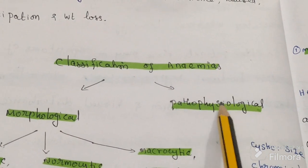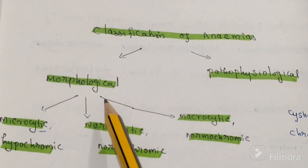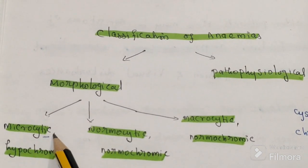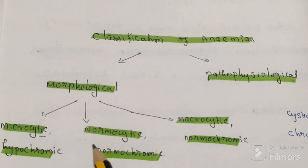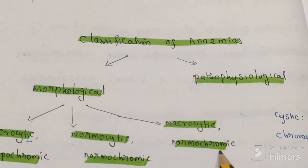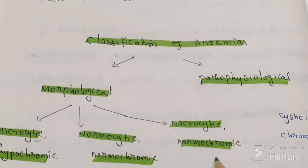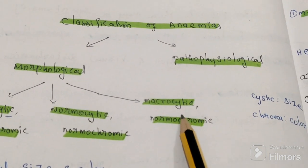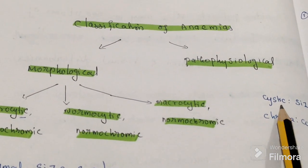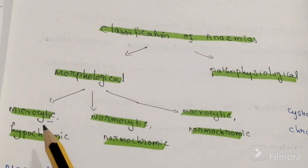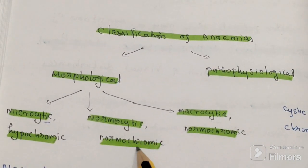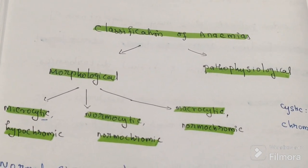Then normocytic or normochromic, and macrocytic or normochromic — these are the three main types. We are using two new terms: 'cytic' means size, and 'chrome' means color. So based on size and color — morphology — we classify into microcytic hypochromic, normocytic normochromic, and macrocytic normochromic anemias.